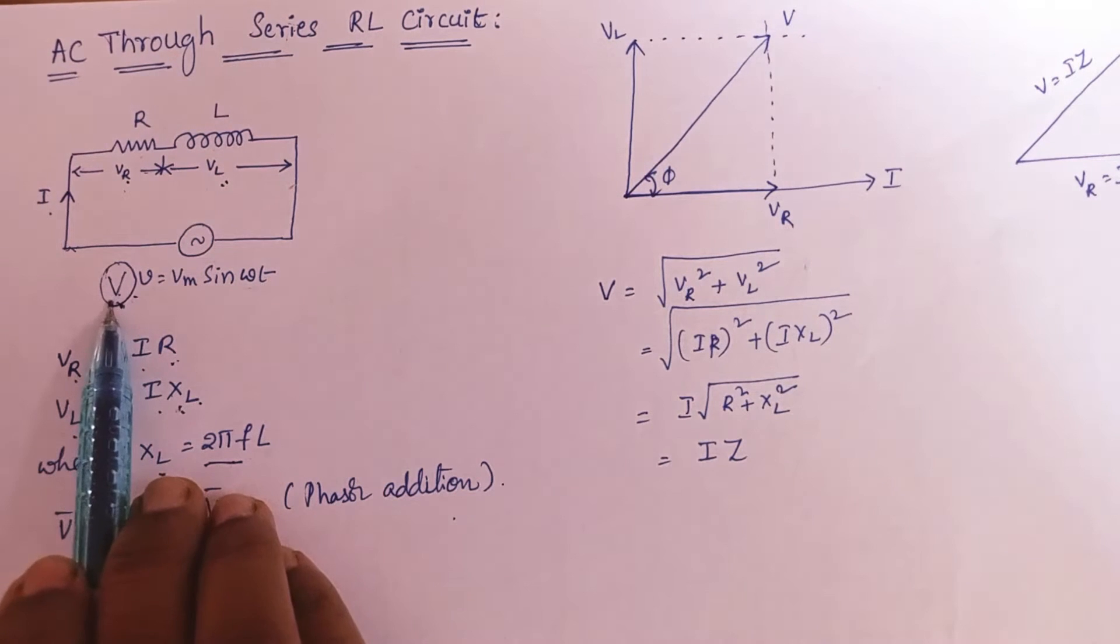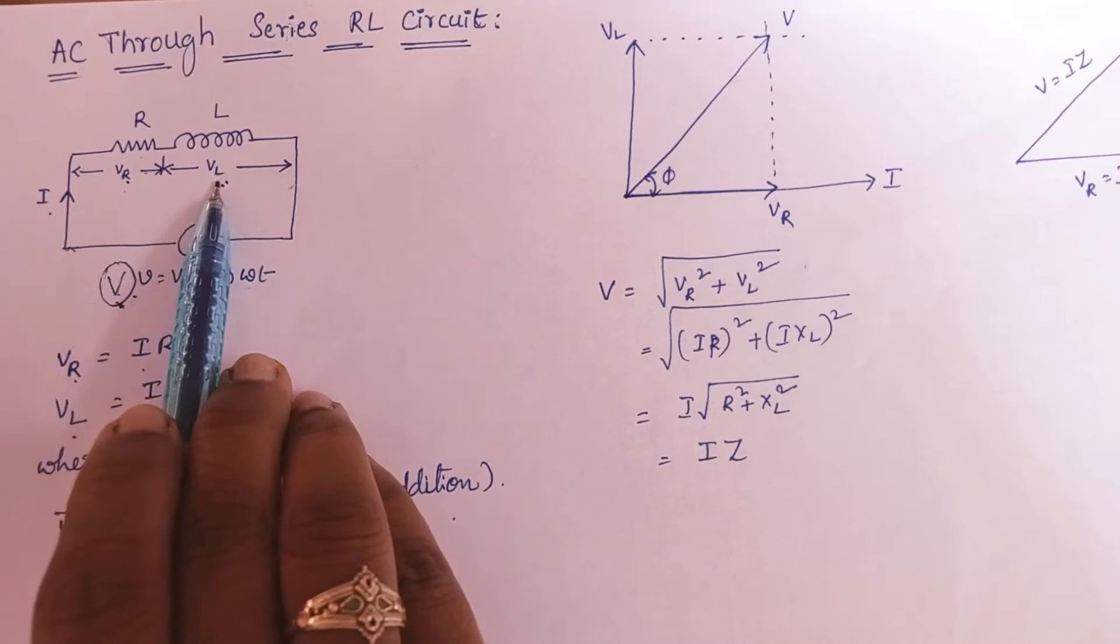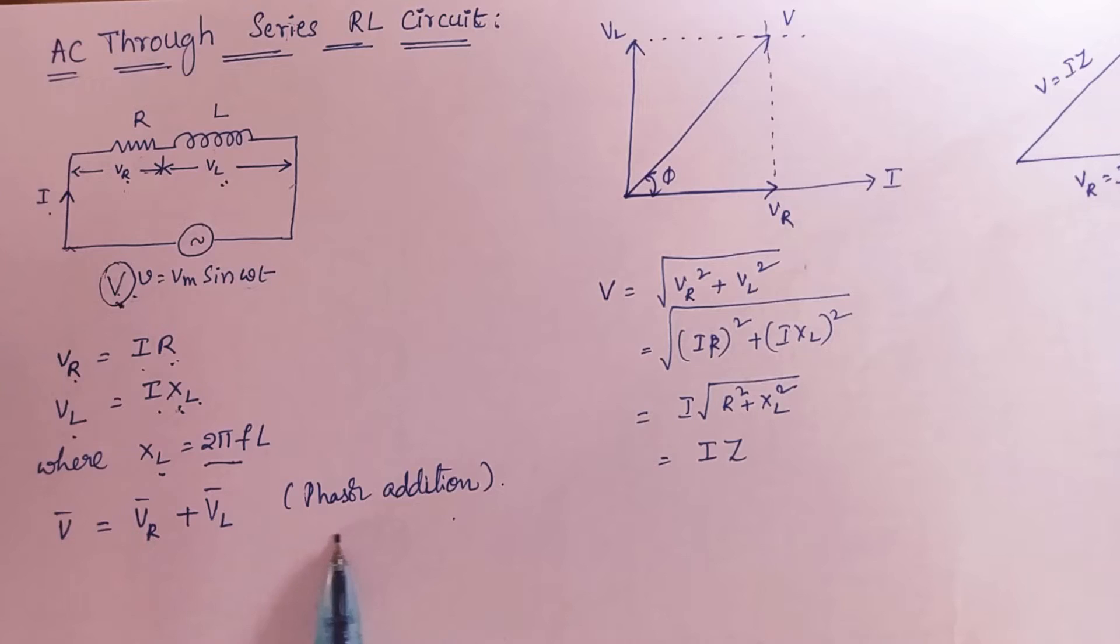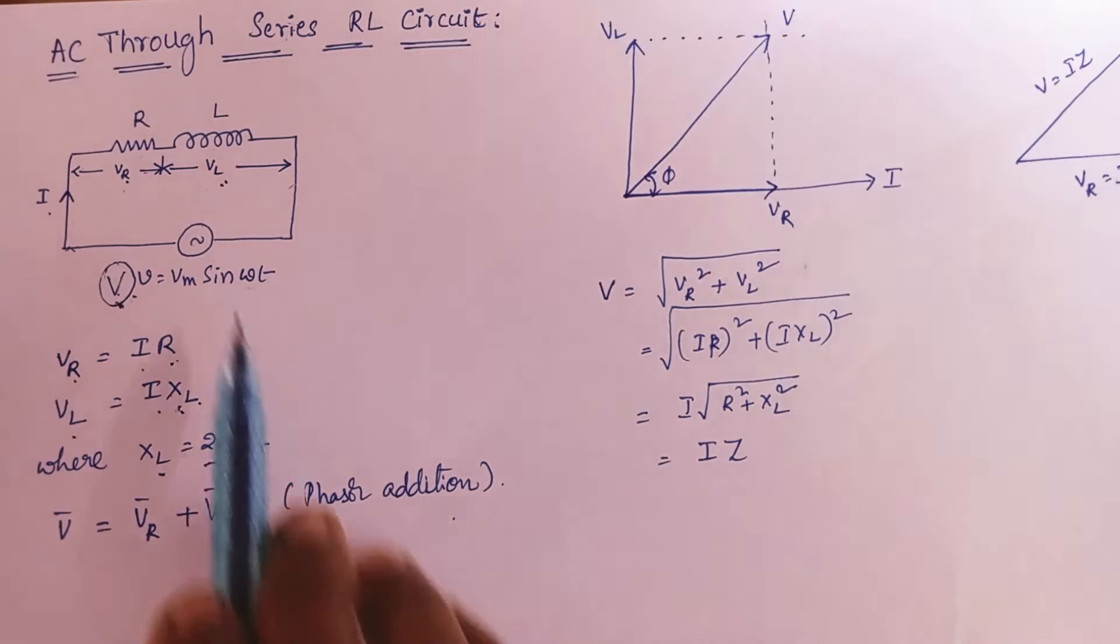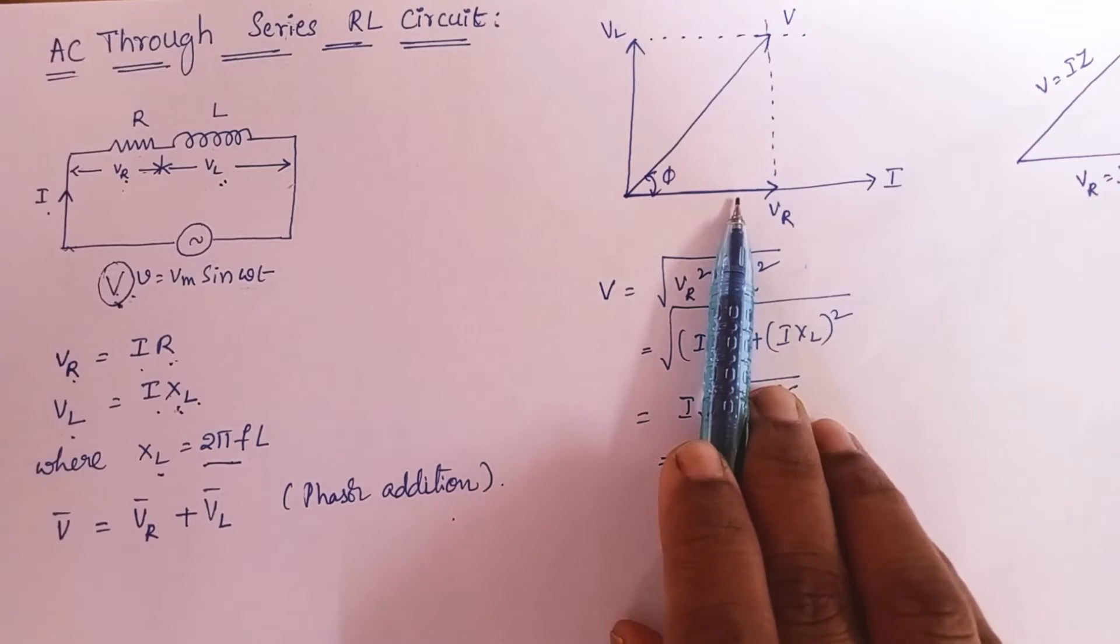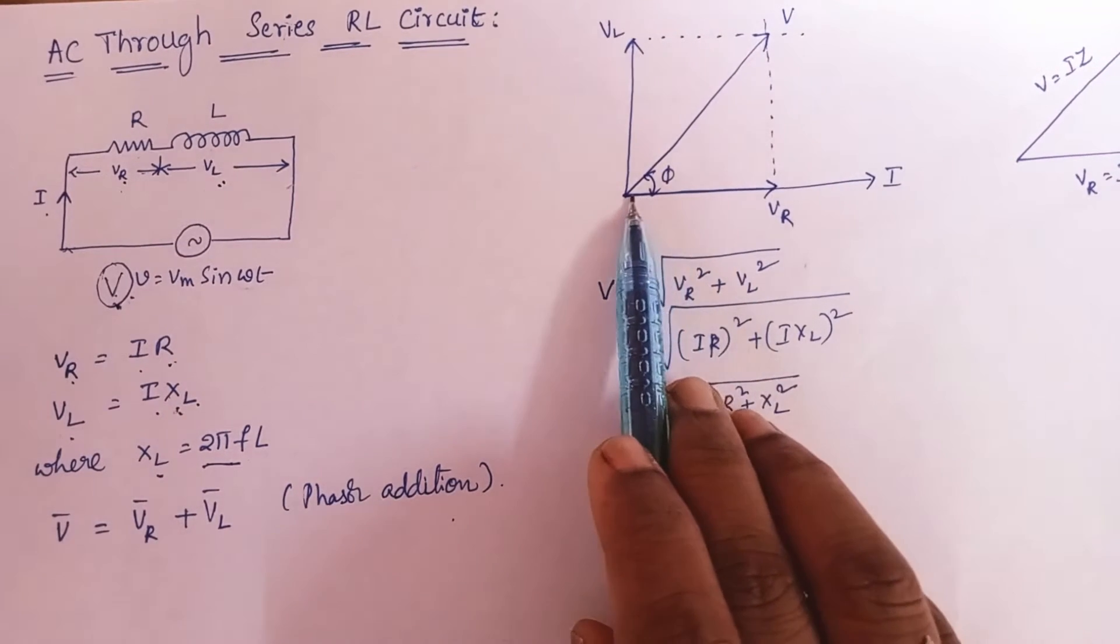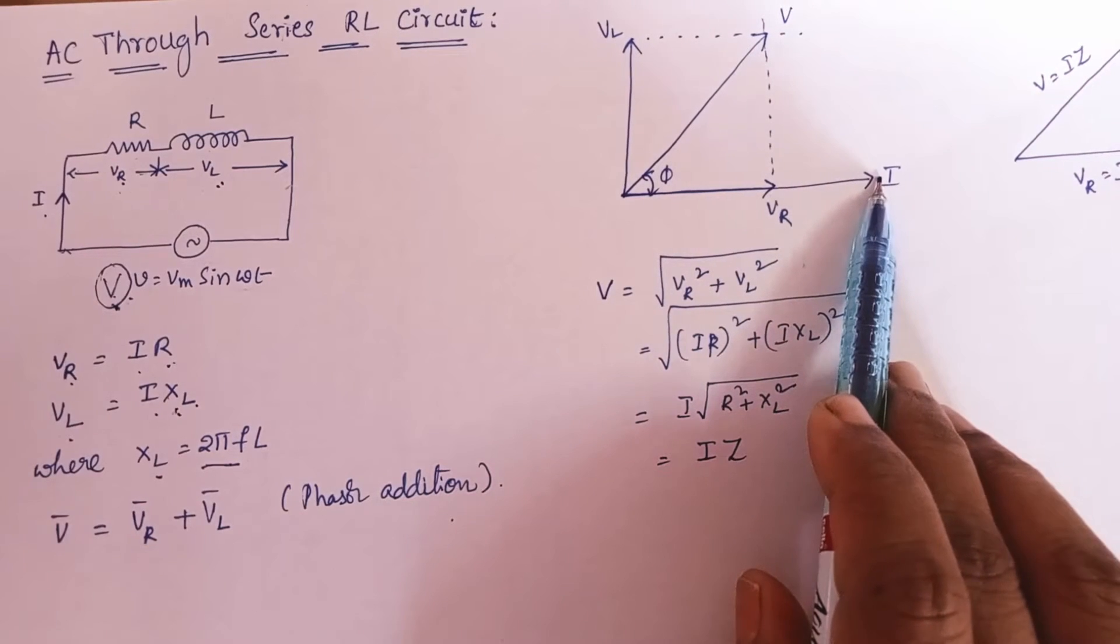This supply voltage, so this voltage will be the resultant of Vr and Vl. So that is nothing but the phasor addition. Let us discuss the same circuital conditions using phasor diagram. Because the current is common for both elements, I have considered current as my reference.